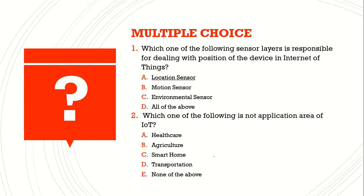Question number two: which one of the following is not an application area of Internet of Things? A) health care, B) agriculture, C) smart home, D) transportation, E) none of the above. The answer is E) none of the above.